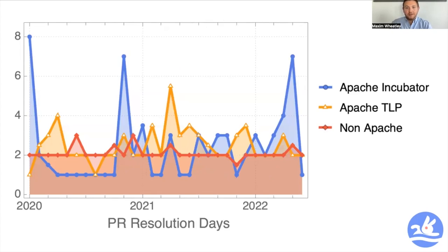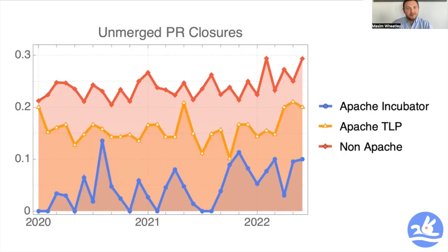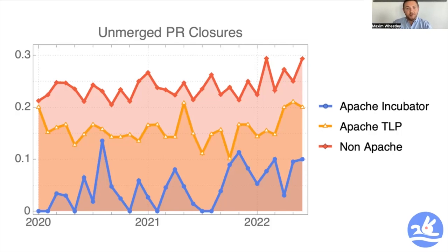Looking at PR resolution days: the non-Apache leading projects are more stable and consistent across the board. Unsurprisingly, the younger, faster-moving projects are much more erratic — sometimes much faster, sometimes much slower. There aren't too many action items from this, but it's interesting data regardless. On the overall number and ratio of unmerged PR closures, the non-Apache projects have a higher level of unmerged PR closures, while the incubator projects are generally merging most everything. The key takeaway is that the Apache ecosystem is again leading the way and providing a more responsive, more effective pathway as a general rule — something to be proud of.